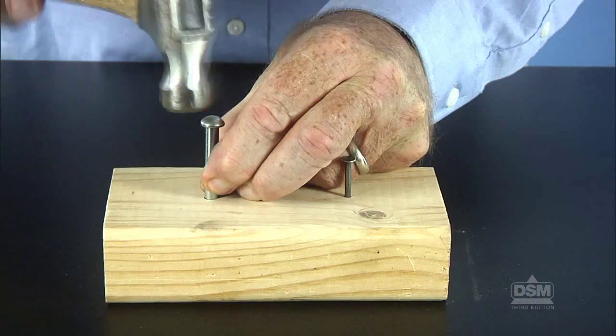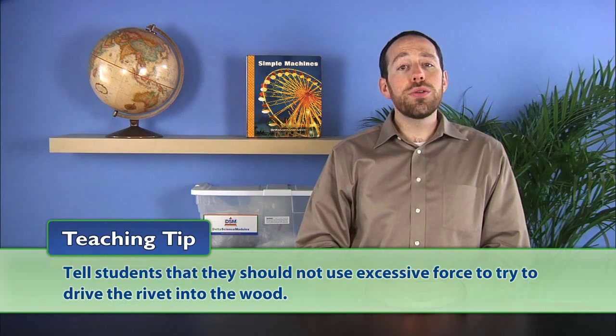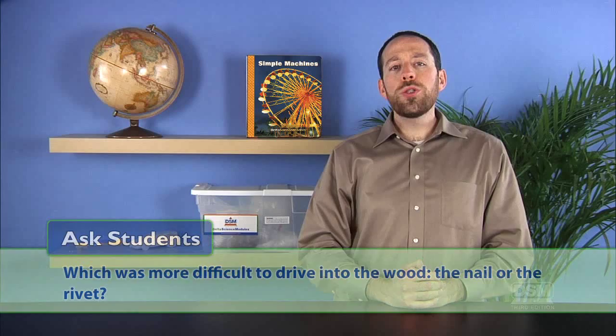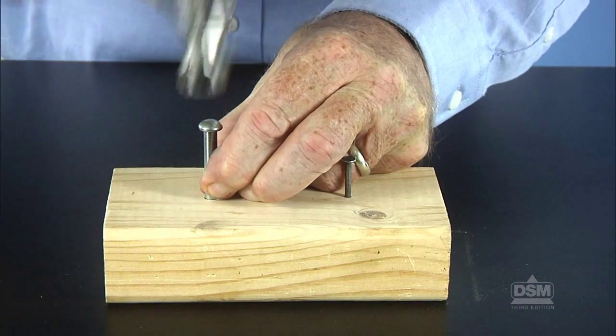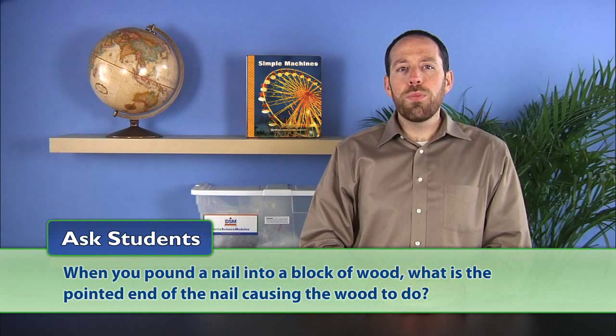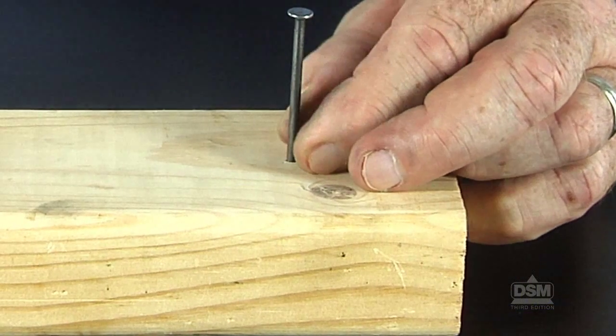Next, have students try to hammer the rivet into the scrap of wood. Tell students that they should not use excessive force to try to drive the rivet into the wood. After everyone has finished experimenting and recording their observations, ask students which was more difficult to drive into the wood, the nail or the rivet. Students should say that the rivet was more difficult to drive than the nail. Then ask, when you pound a nail into a block of wood, what is the pointed end of the nail causing the wood to do? Explain that the point of the nail acts as a wedge, pushing the wood apart.